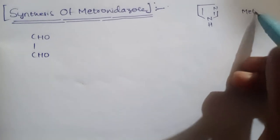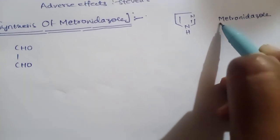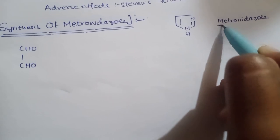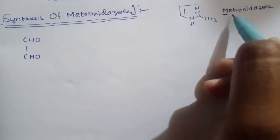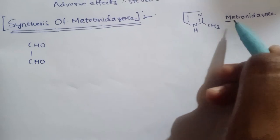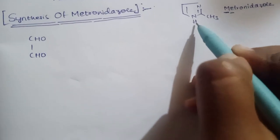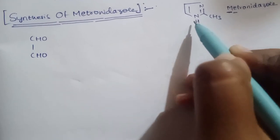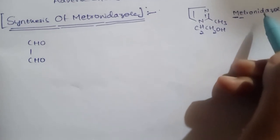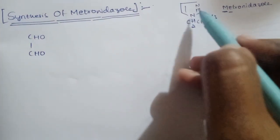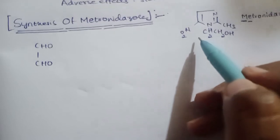In the name itself we can find hints to remember metronidazole easily. 'Metro' — M stands for methyl group, that is CH3, placed between N and N. 'E' stands for ethanol group, that is CH2CH2OH. And 'nitro' means place the NO2 group. So this gives us the basic structure of metronidazole.